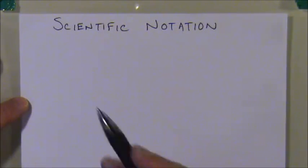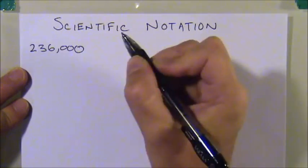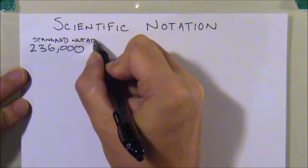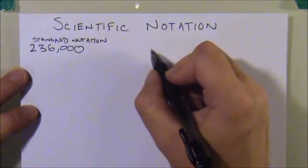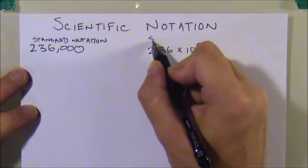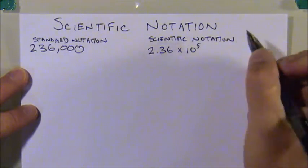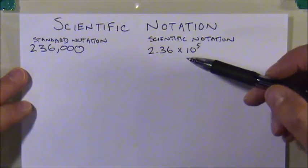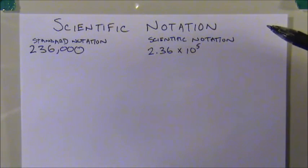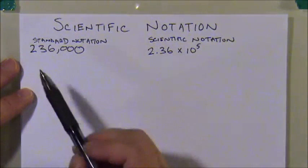The easiest way to understand scientific notation is to look at it through examples. If we took the number 236,000 in standard notation, that number expressed in scientific notation would be 2.36 times 10 to the fifth. It's a common misconception that scientific notation is designed only to make very large or very small numbers easier to write — in reality, that's only coincidental. It's really about expressing the correct number of significant figures.